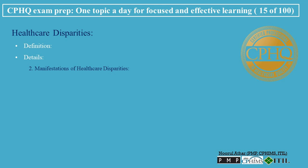Manifestations of healthcare disparities: Disease incidence rates — certain groups may have higher rates of specific diseases due to genetic, environmental, or lifestyle factors. Health outcomes — variations in recovery rates, complications, and mortality for the same diseases or treatments among different populations. Access to medical care — differences in the availability of healthcare services, including preventive care, specialist services, and advanced treatment options. Quality of care received — discrepancies in the standard of care provided to different groups, influenced by biases or systemic inequalities.